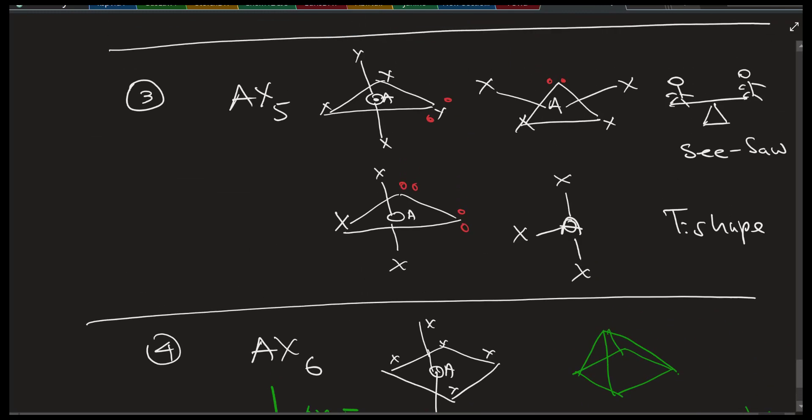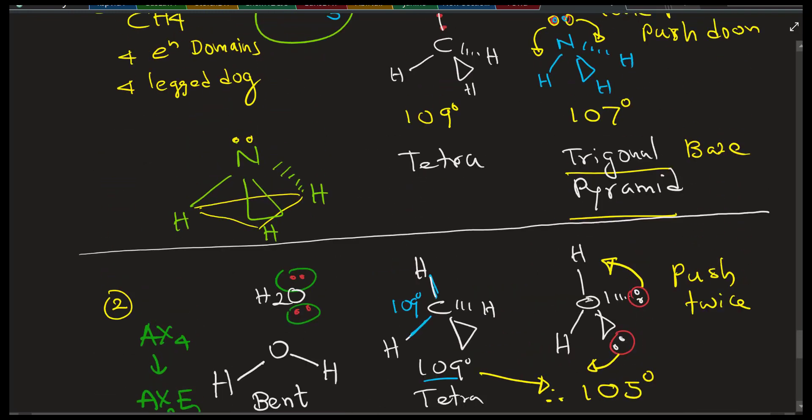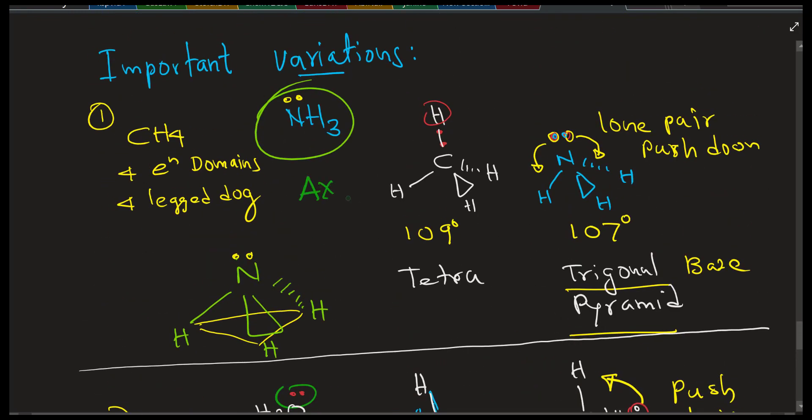So now one lone pair on the top one is AX4E, and this one has AX5 has AX4 one lone pair, and the next one has AX3 two lone pairs. Now we can also label water. It has AX4 originally, but we put two lone pairs, AX2E2. And ammonia has one lone pair, AX3E.